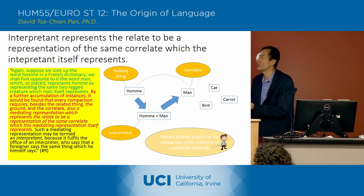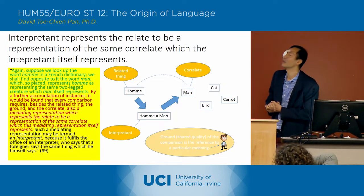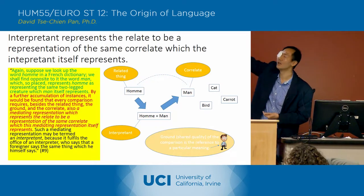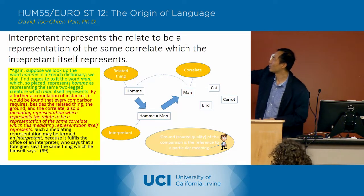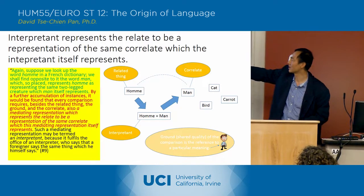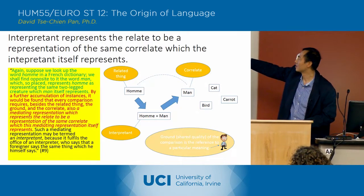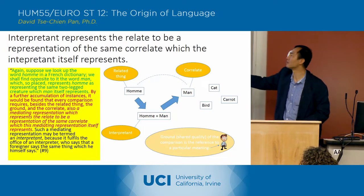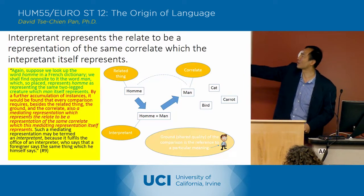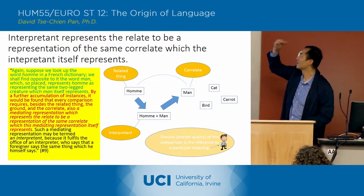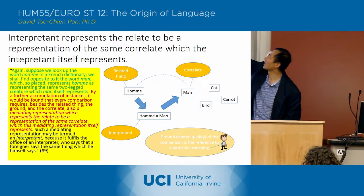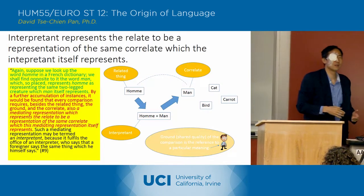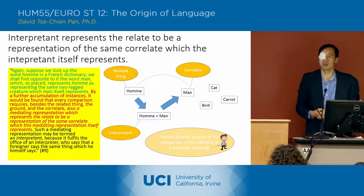What we've got here are four pieces that exist in every comparison: we've got the related thing, we've got the correlate, we've got the ground — the shared quality of the comparisons — which is the reference to a particular meaning, to 'man'. And then we've got the interpretant. So even if the related thing and the correlate have a shared quality, the interpretant is defining the way in which they share that quality.